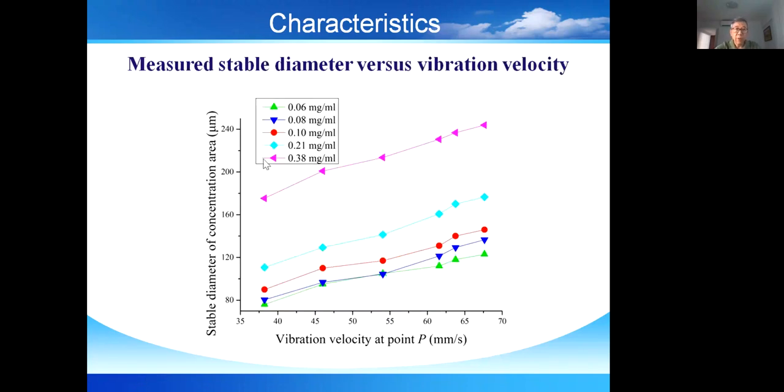This figure shows the measured temperature and velocity of the device. From this figure, we can see that as the vibration velocity increases, the stable diameter of the concentration spot increases. This is because the concentration effect increases with the vibration velocity.